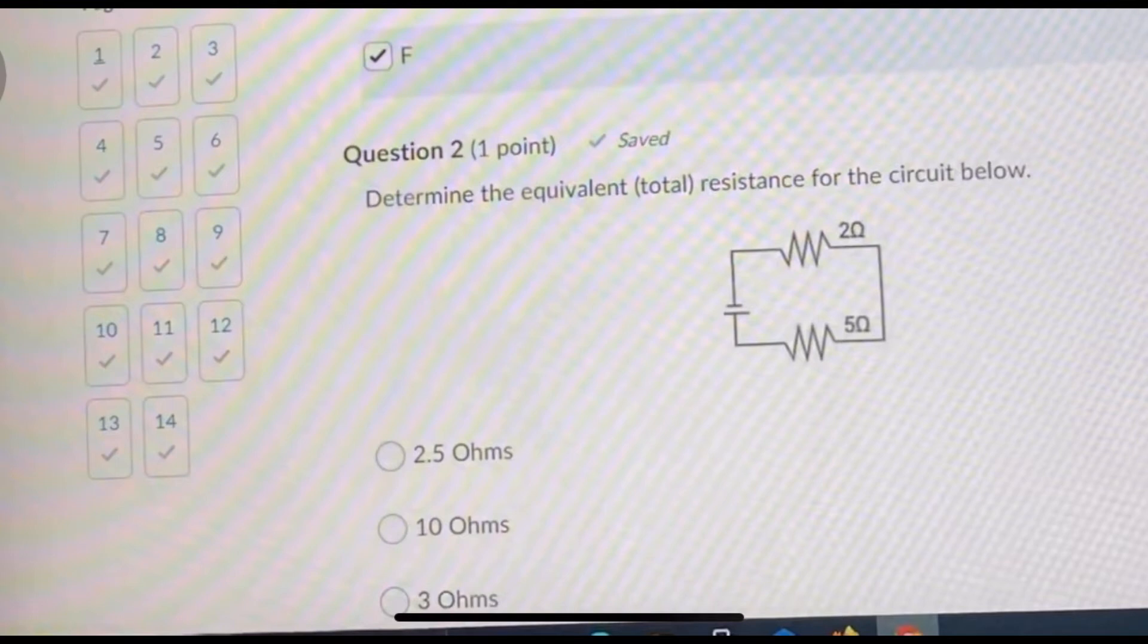There's not really a total current because it's the same throughout the whole path. For number two your total resistance, all you have to do is add both of your resistances. So 2 plus 5 is 7, so your total resistance is 7 ohms since there's only two resistances. 2 plus 5 equals 7 ohms.